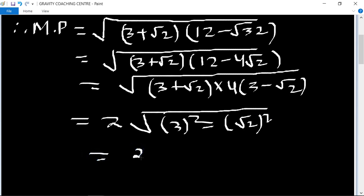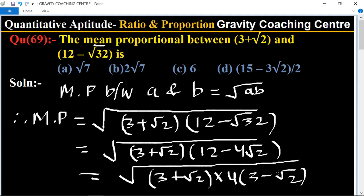2 root of 9 minus 2 equals 2 root 7, which is the required answer. So option b is the right answer.